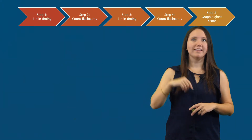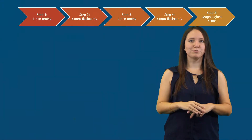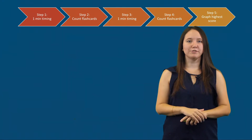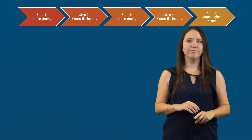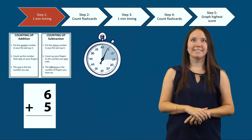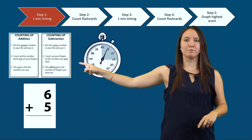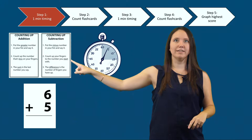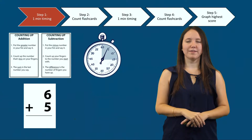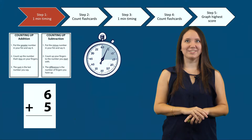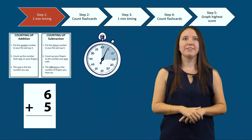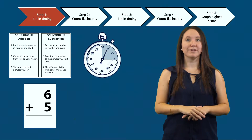For step four, count the correct flashcards from trial two. And finally, for step five, the student graphs the highest score from the two trials. Before the activity begins, make sure you have your Counting Up Addition and Subtraction poster displayed so that students can use it to help them answer flashcard facts if they need it.